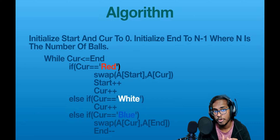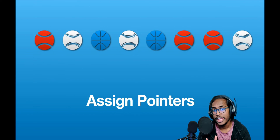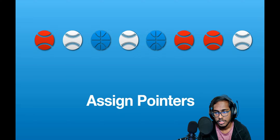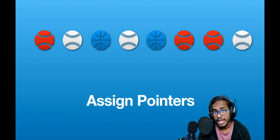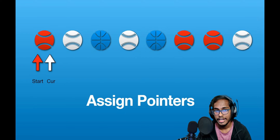Now let's look at a visual demonstration of this algorithm to get a better understanding of how it works. I've taken a random array of balls of the three colors. As you can see, we have three red balls, three white balls, and two blue balls. The first step is to initialize the pointers: start at index zero, cut at index zero, and end at index n minus one — the last element in the array.